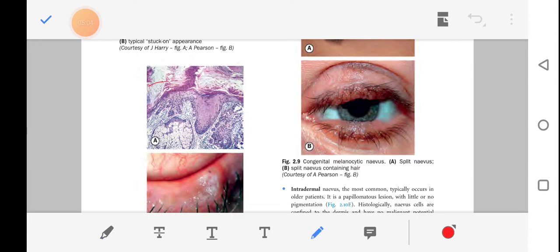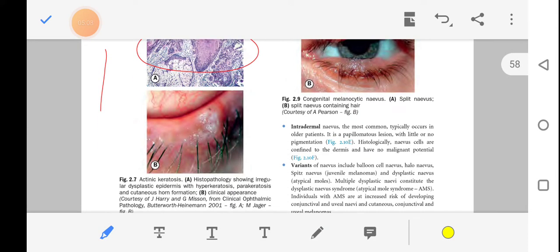And this is actinic keratosis. This shows irregular dysplastic elements. Hyperkeratosis, parakeratosis, cutaneous horn formation, and this is its clinical appearance.